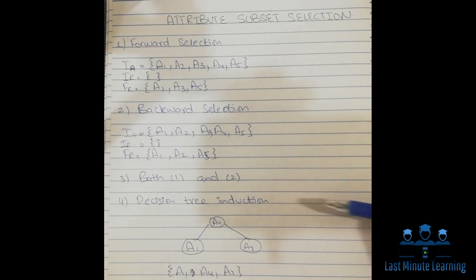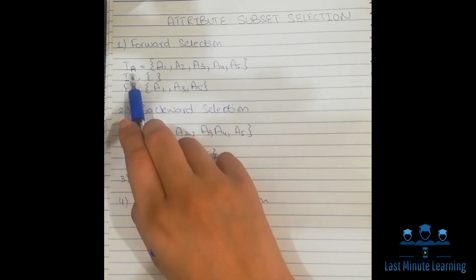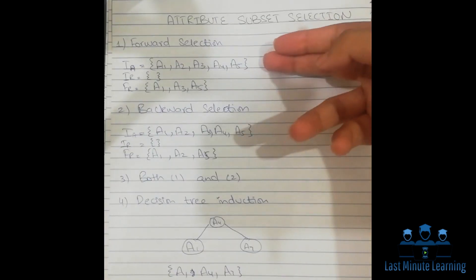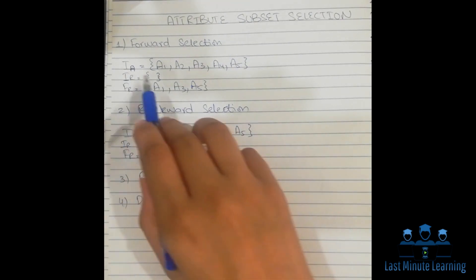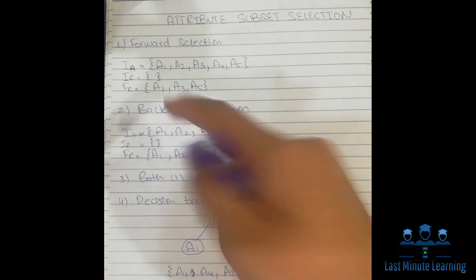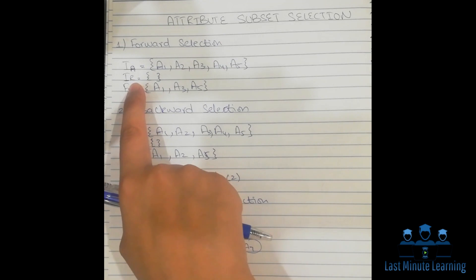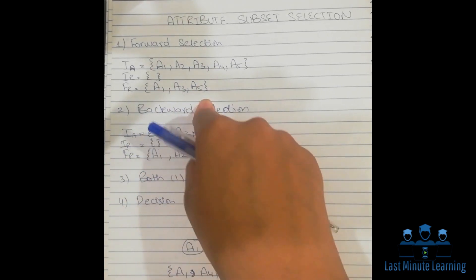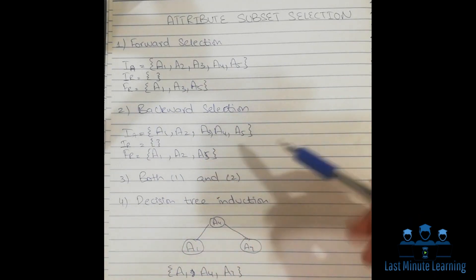Now let's study the first step: forward selection. Here we are given a subset known as the initial level of attribute set. This is a subset of attributes given as the initial reduced set, meaning the data is initially reduced to a form required by us. The final reduced set is the subset containing the final answer of the reduced set.